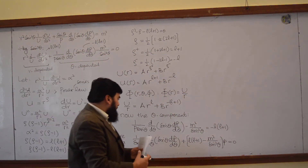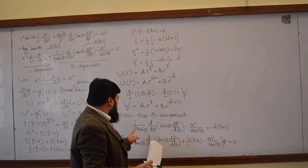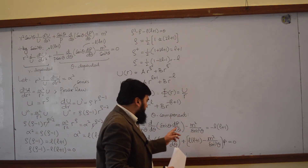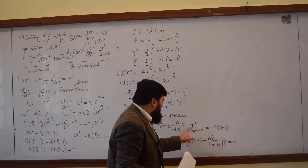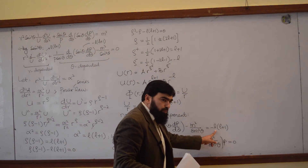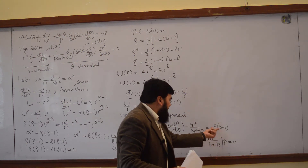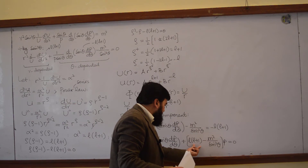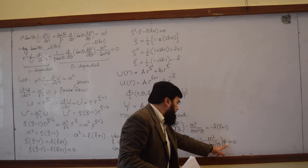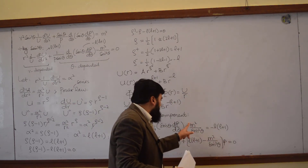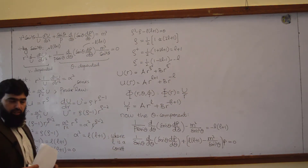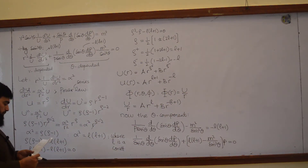Multiplying through by P: the first term stays as 1 over sine theta; P multiplies the second term; when the third term comes over, it becomes plus; and P multiplies the minus m squared term. We have just reshuffled this equation.